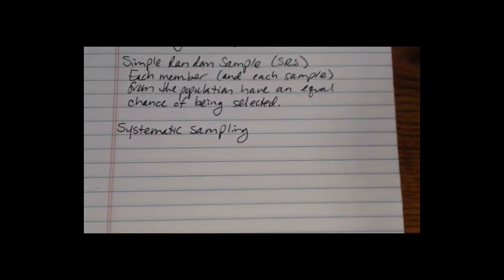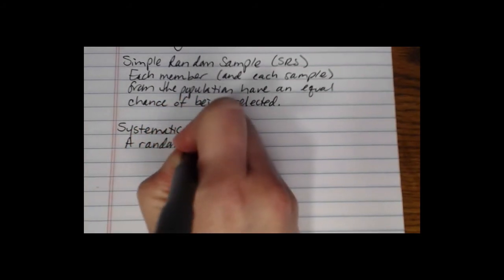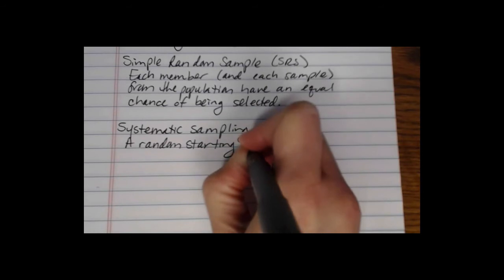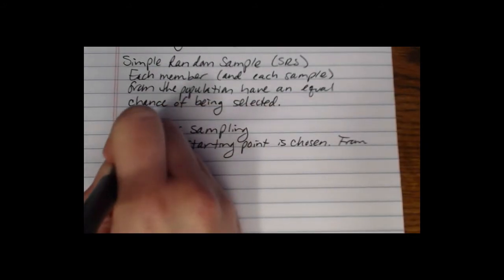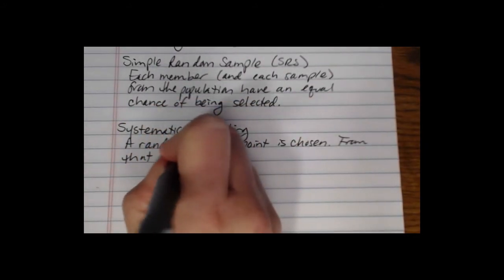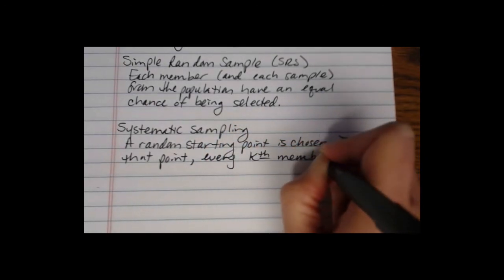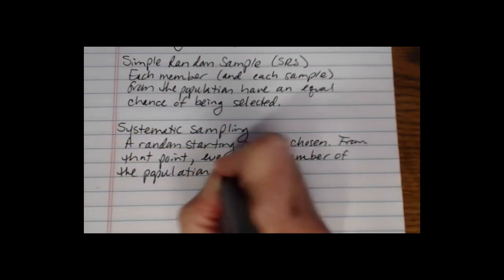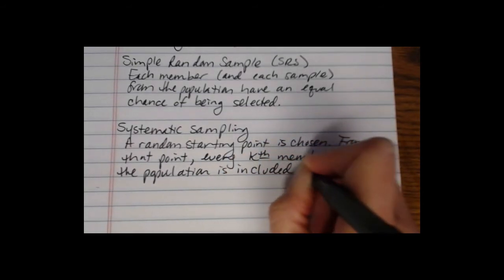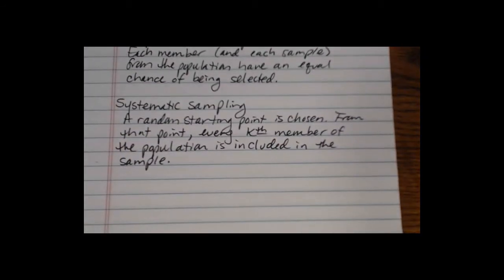Key features of systematic sampling are that a random starting point is chosen, and then from that point every kth member of the population is included in the sample.